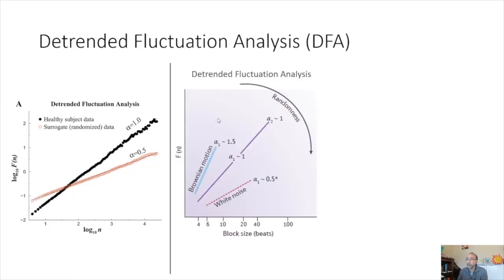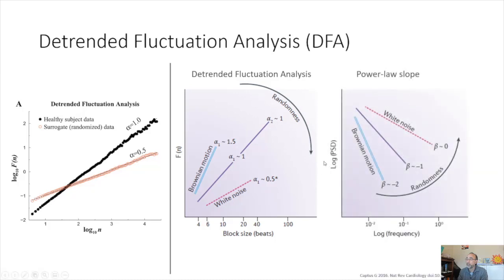This graph shows the relationship in terms of pink noise, brown noise, and white noise. Pink noise has a slope of 1, similar to the power law relationship. White noise has a smaller slope, Brownian motion has a higher slope. Pink noise, or alpha of 1, is balanced between these two extremes.